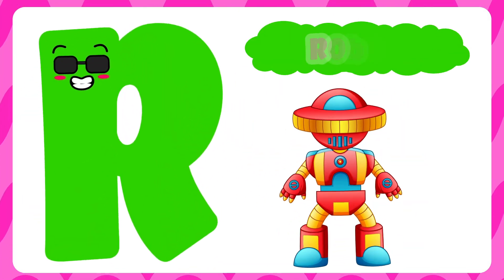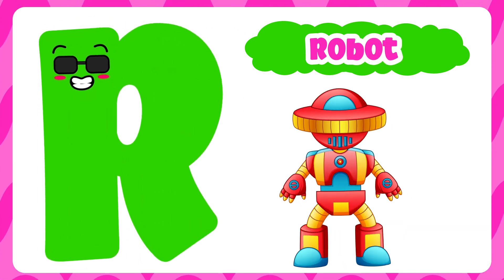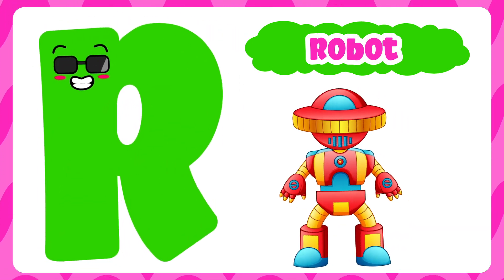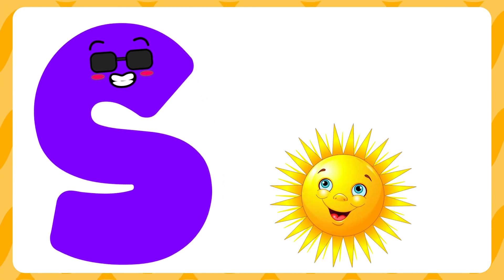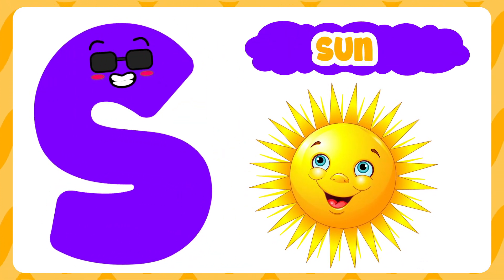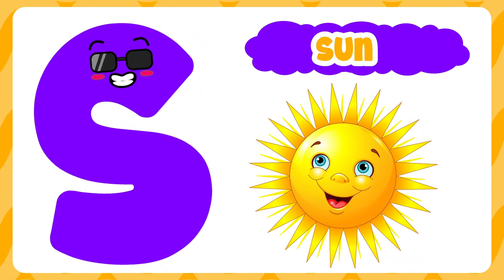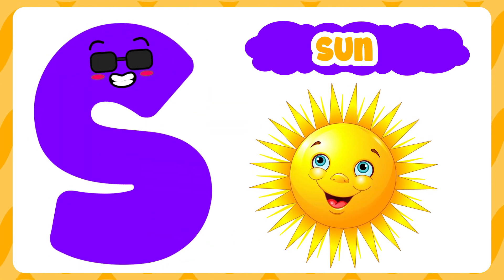R is for robot. Ru, ru, ru. R is for robot. Ru, ru. S is for sun. Su, su, sun. S is for sun. Su, su, sun.